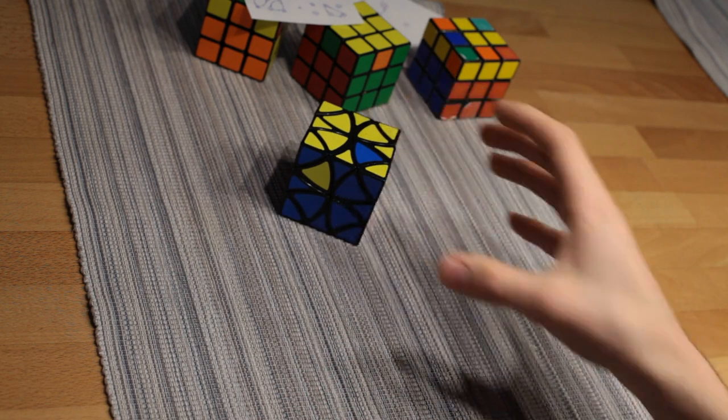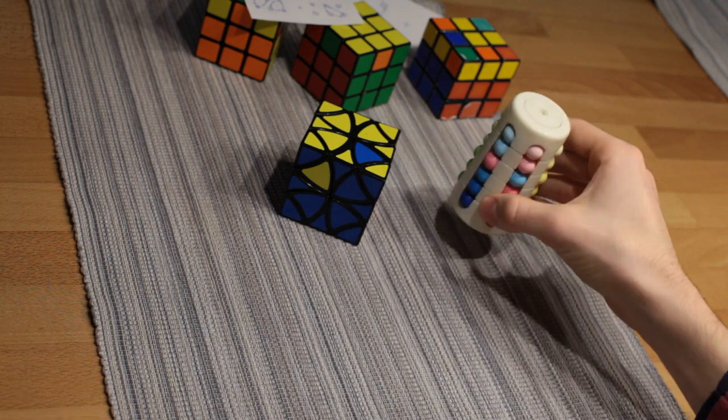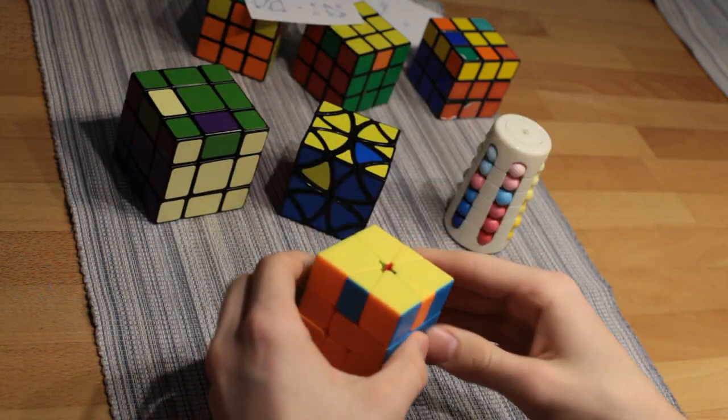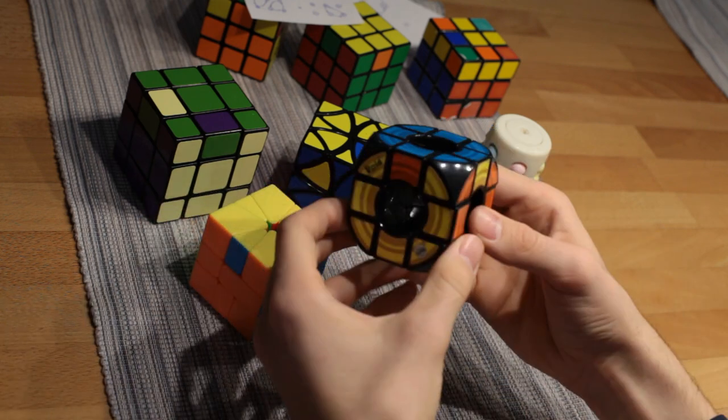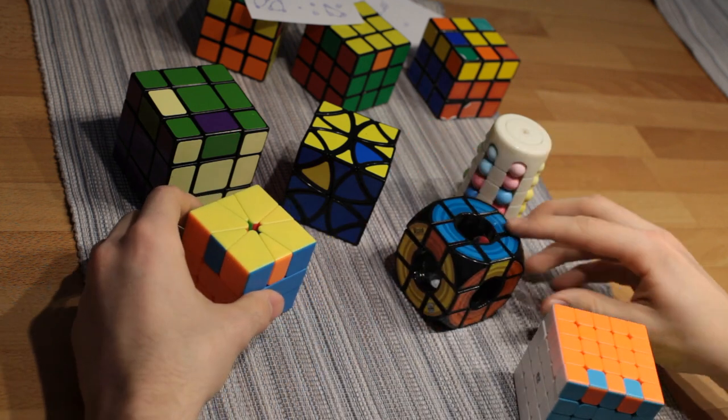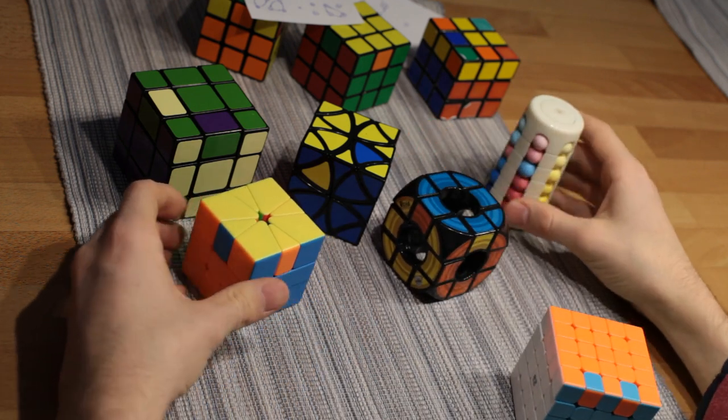All parities on puzzles like the curvy copter, the tower of Babel, the square one, the mix-up cube, the void cube, or the 5x5 can be explained by this.